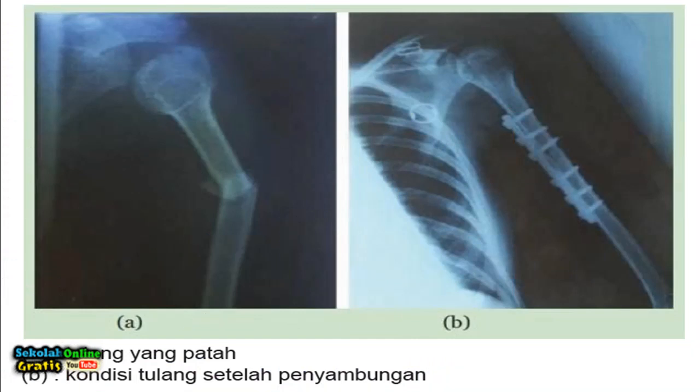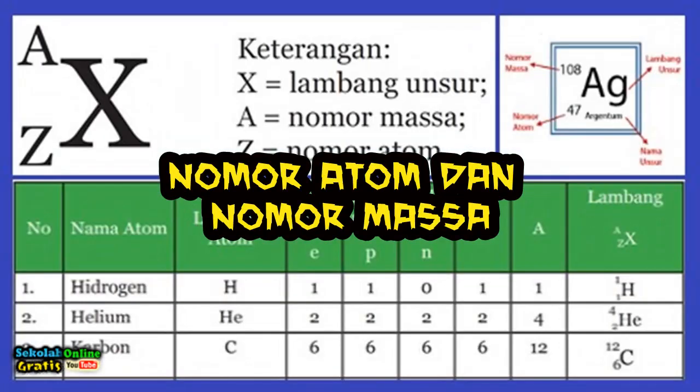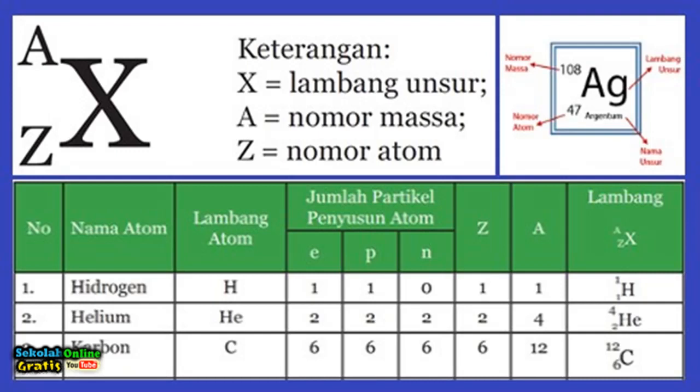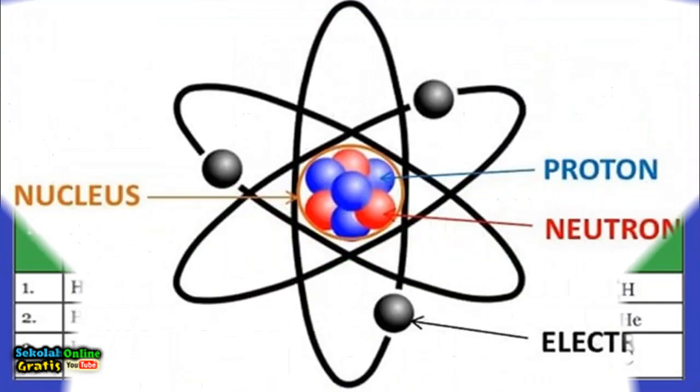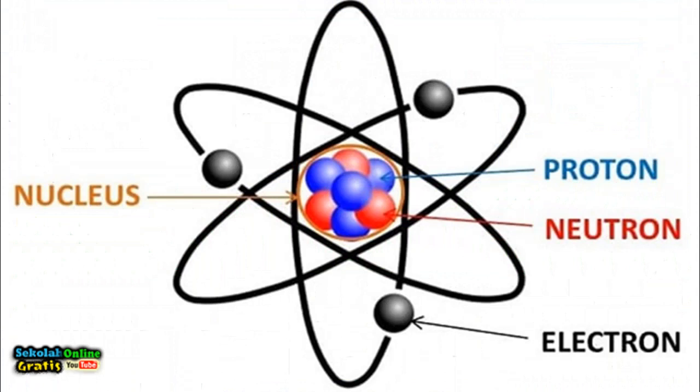The following is an example of a disease diagnosis using x-rays: broken bone and condition of bone after splicing. Atomic number and mass number. Atoms of different elements have different numbers of sub particles. Atoms in a given element have the same number of protons in their nucleus. The mass number of an atom is determined by the number of neutrons, protons and electrons.